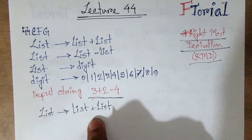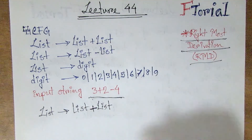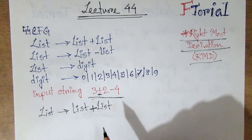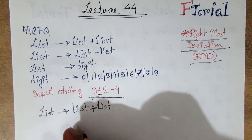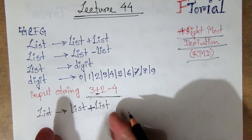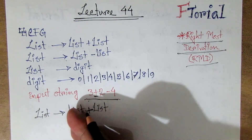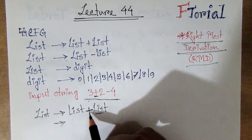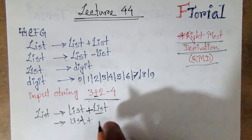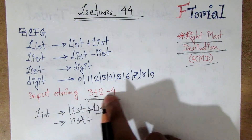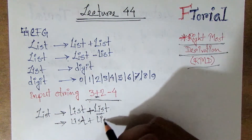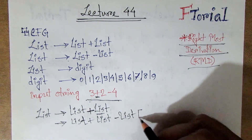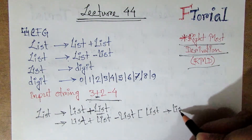So if we start with the start variable, we have to start with the start variable list. As we said, the list implies list-list. So list implies list-list.